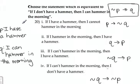So let's change this to symbolic form. I'm going to let P represent I have a hammer, and Q represent I can hammer in the morning. So the conditional statement that we're given is, if I don't have a hammer, if negation P, then I can hammer in the morning Q.